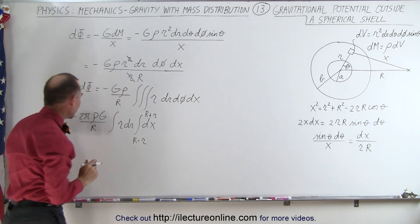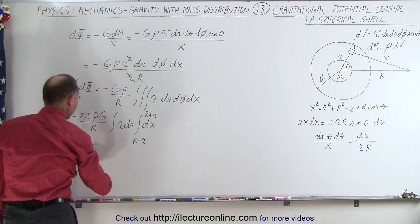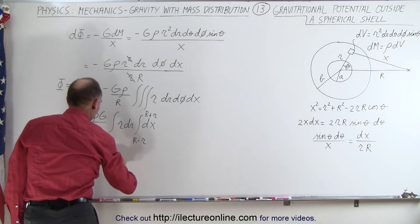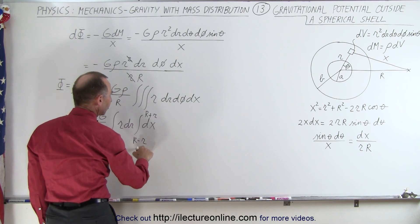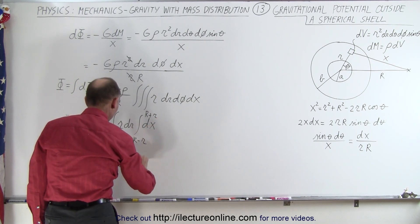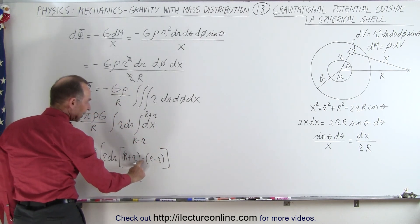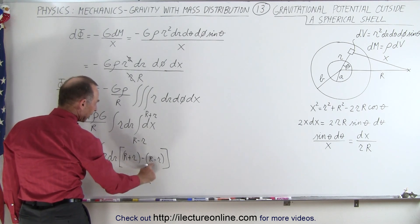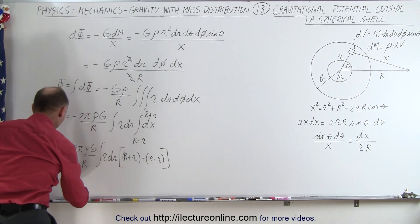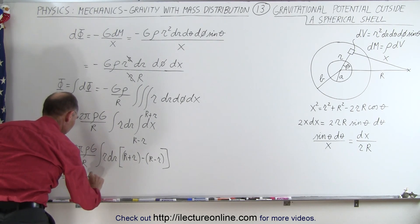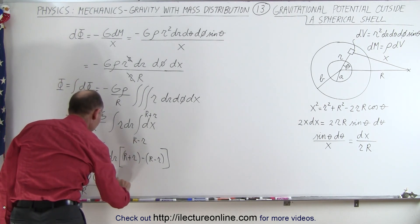Integrating dx from (R − r) to (R + r), we evaluate x at those limits: plugging in the upper limit R + r and subtracting R − r. The negatives cancel and the big R's cancel, giving 2r. So this becomes −4πρG/R times the integral of r · r dr, which is r² dr.